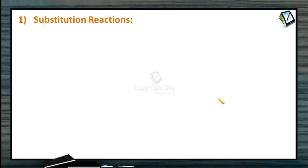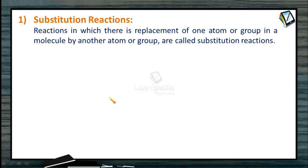Now let's move into substitution reactions. What is the meaning of substitution? If we take the case of cricket, the 12th man is a substitute — whenever there is any requirement, a particular player is replaced by the 12th man. Similarly here, substitution reactions are reactions in which there is a replacement of one atom or group in a molecule by another atom or group. These kinds of reactions are called substitution reactions.